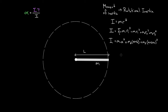For a rod rotating about an axis at its end, we should be able to reason that the moment of inertia must be less than ML² — because ML² would assume all the mass rotates at the full length L, but most of the mass is closer to the axis. The mass at L/2, L/4, or L/8 all have diminished contributions. It turns out, from the integral, the moment of inertia for a rod about its end is one-third ML².